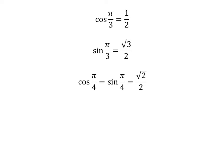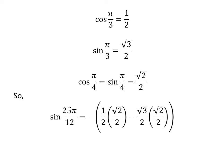Substituting the known values — cosine of pi upon 3 equals one half, sine of pi upon 3 equals square root of 3 upon 2, cosine of pi upon 4 equals square root of 2 upon 2, and sine of pi upon 4 equals square root of 2 upon 2 — we get sine of 25 times pi upon 12 is equal to minus of one half times square root of 2 upon 2 minus square root of 3 upon 2 times square root of 2 upon 2.